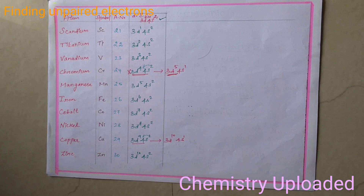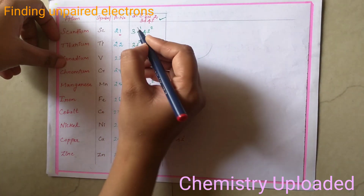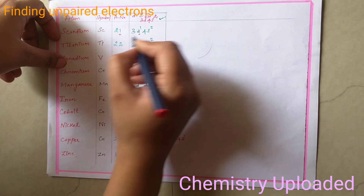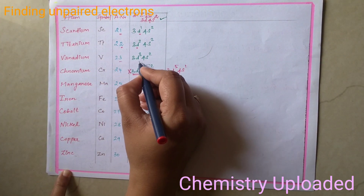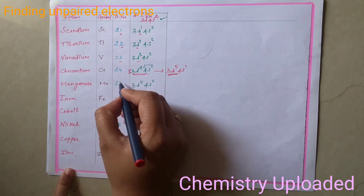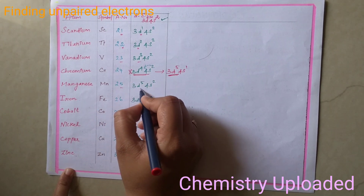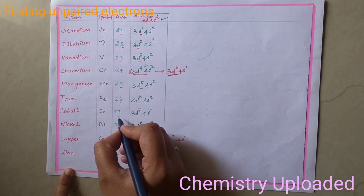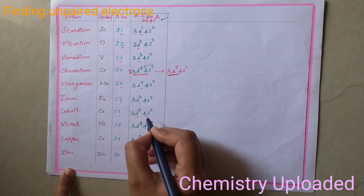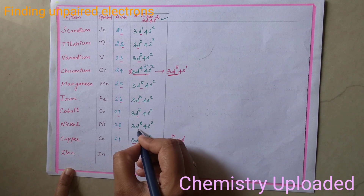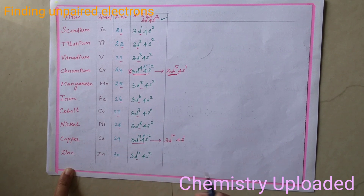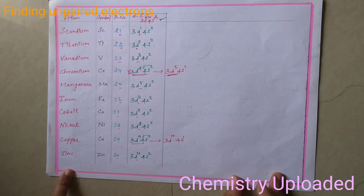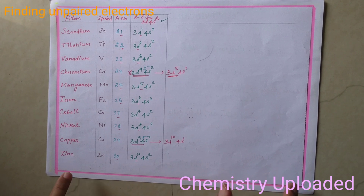So one trick I am giving here: if the last digit is 1 it means 3d1, 2 means 3d2, 3 means 3d3, 5 means 3d5, 6 means 3d6, 7 means 3d7, 8 means 3d8, and 10 means 3d10. This is the trick for writing D-block electronic configurations.